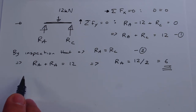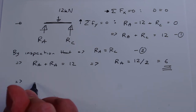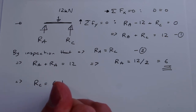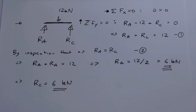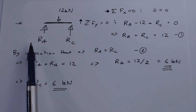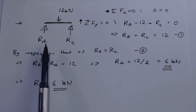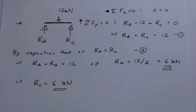When you do your solutions, please don't do them along the line like this — I'm only doing it because I don't have much space. Try to write them under a line each time. So RA equals 6 and therefore RC equals 6 kilonewtons. We've solved the problem — 12 kilonewtons pushing down, with reaction forces of 6 kilonewtons pushing up on each side.